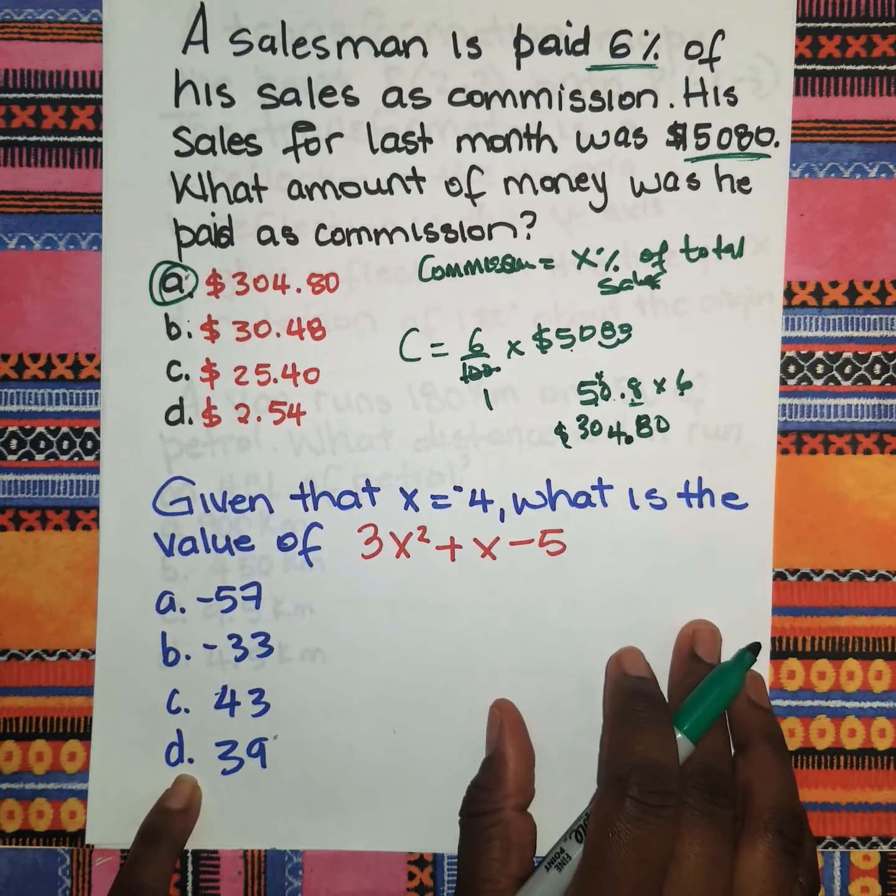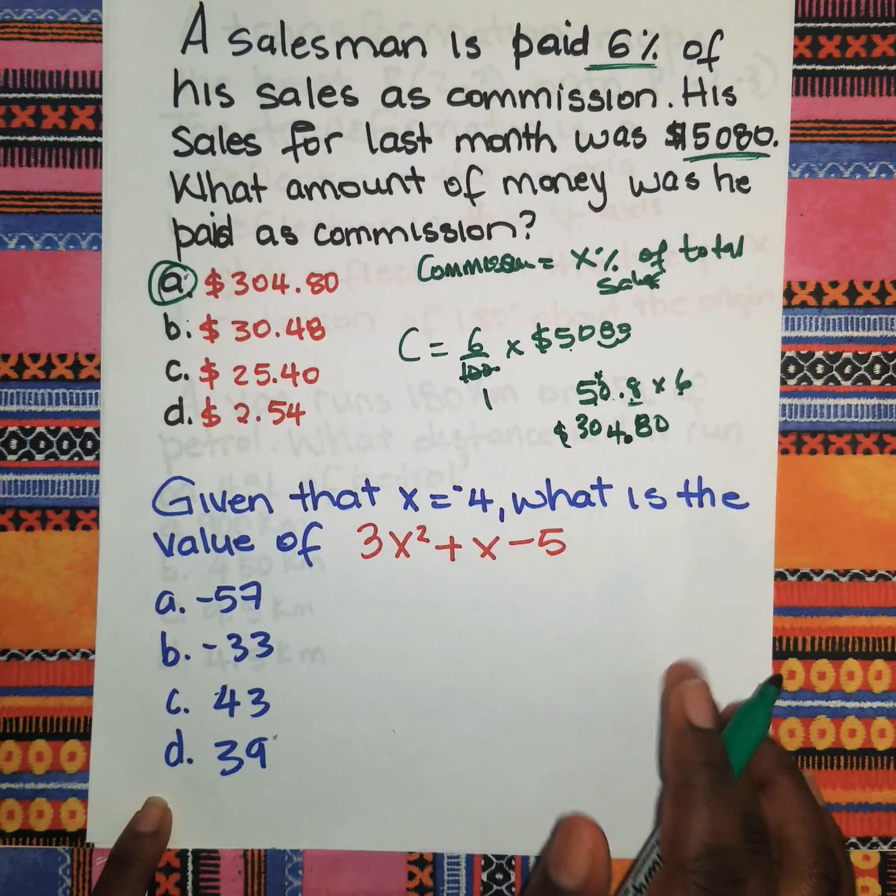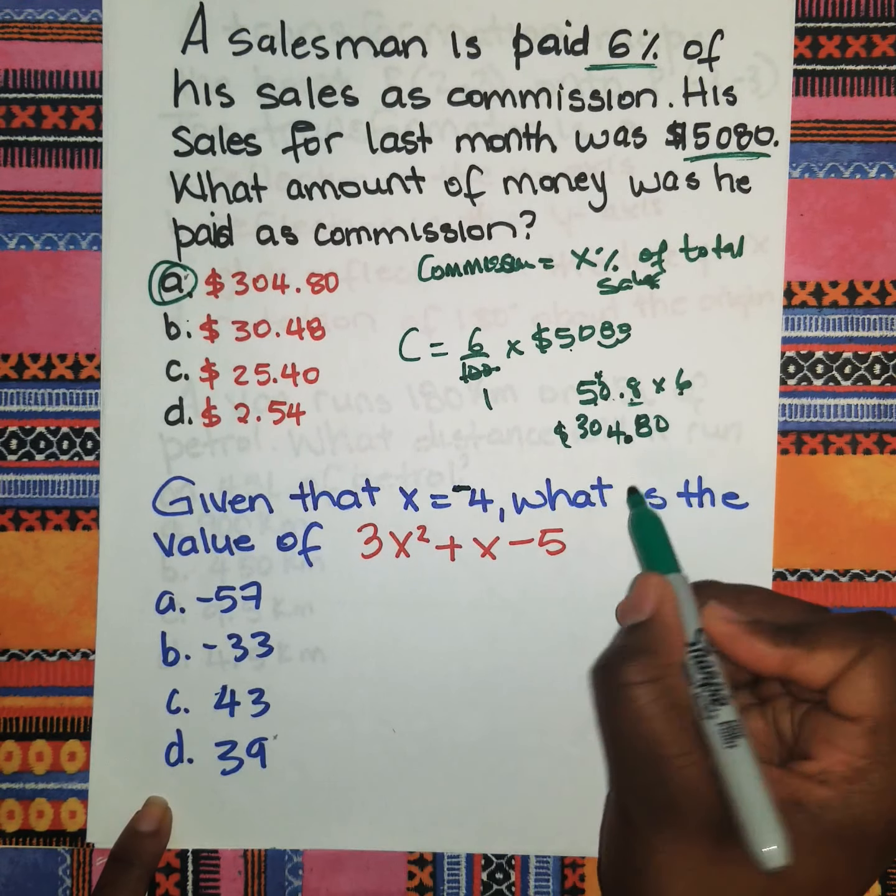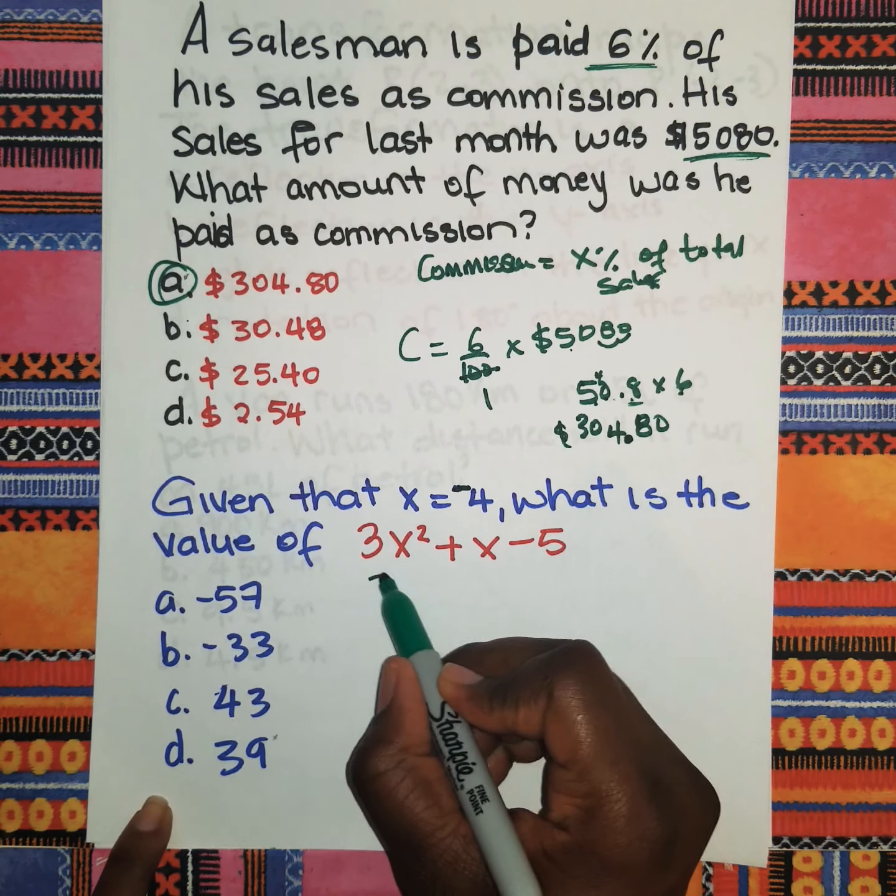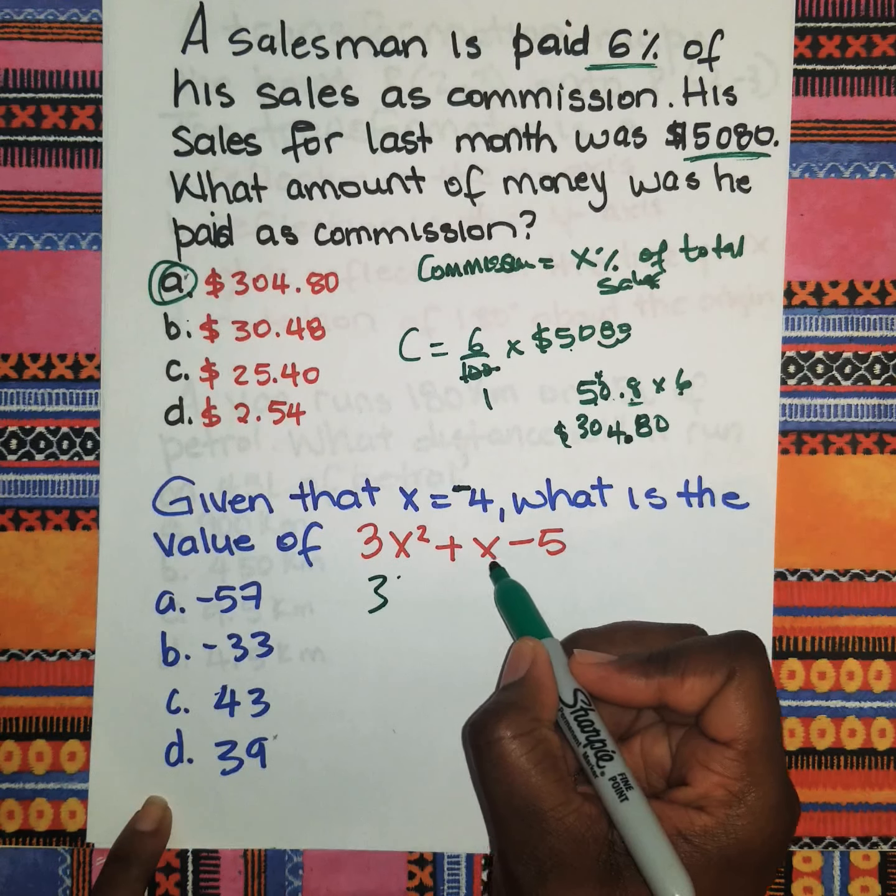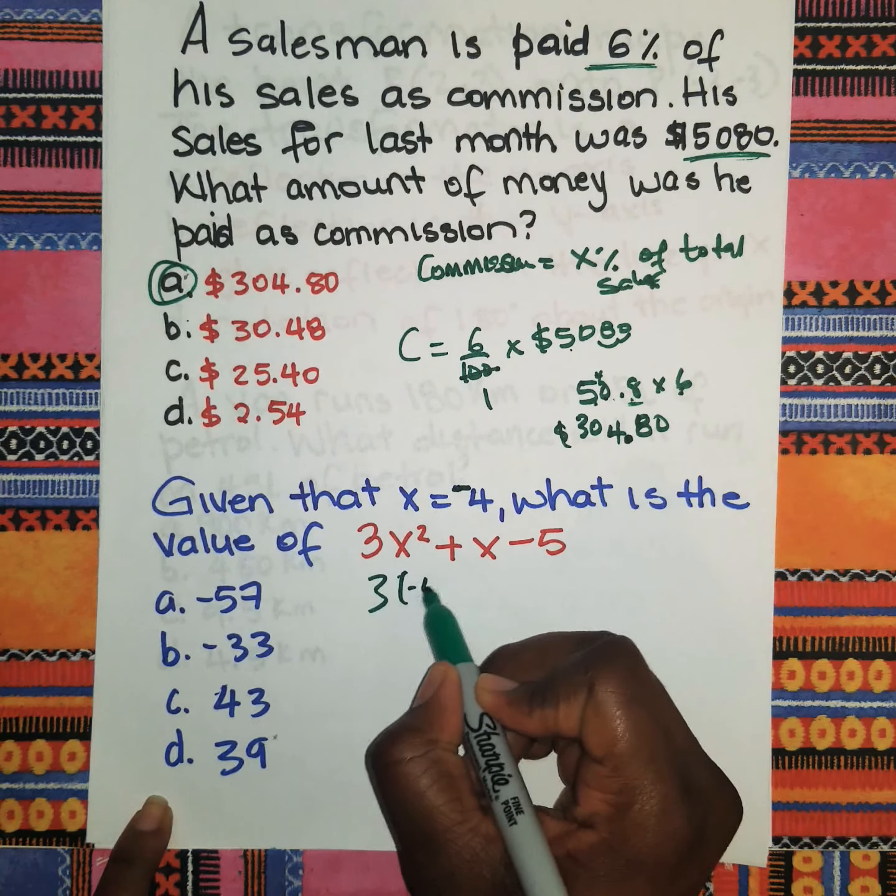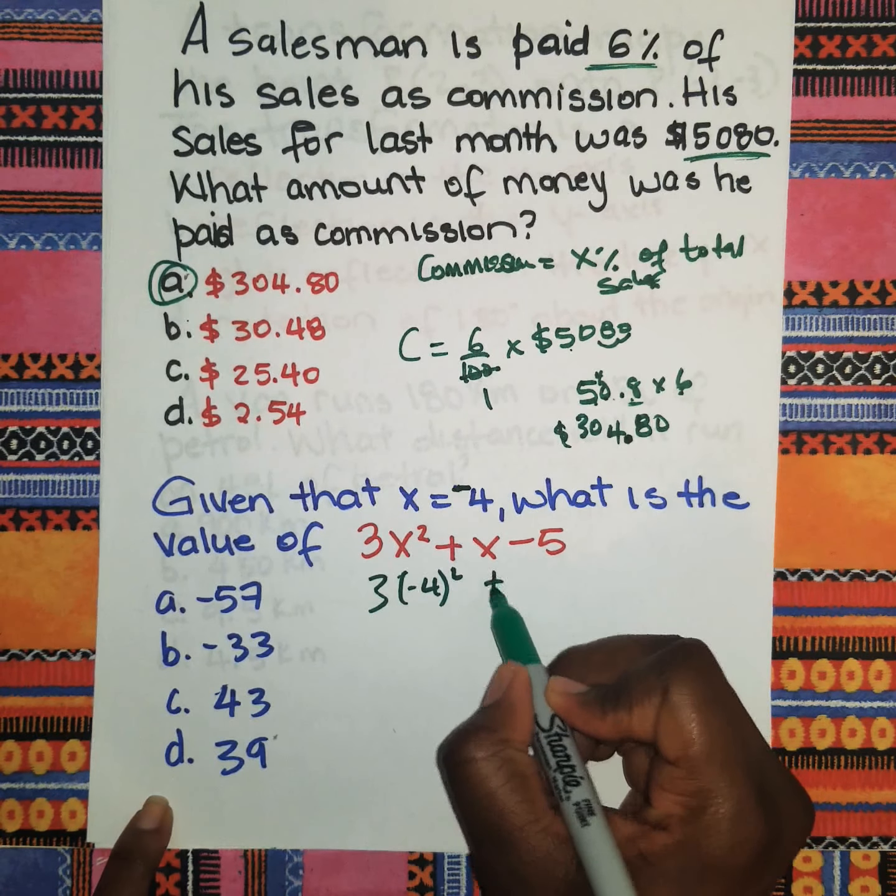Given that x equals negative 4, what is the value of 3x² + x - 5? We know x is negative 4, so anywhere we see x here, we're going to put negative 4 for the answer.